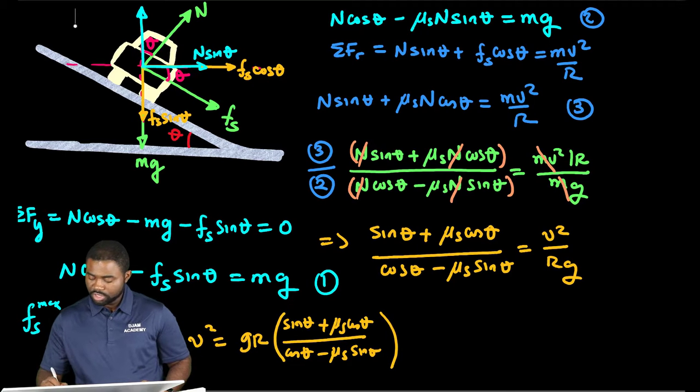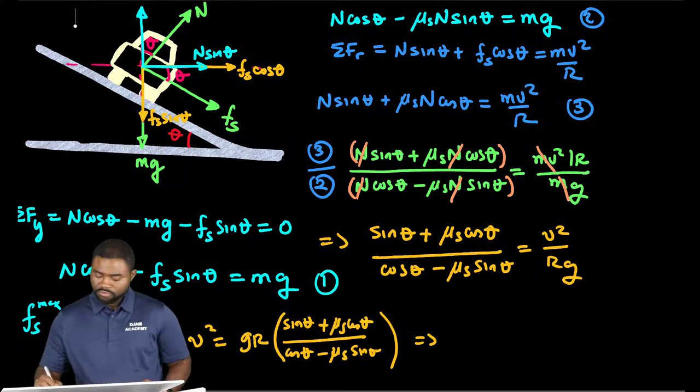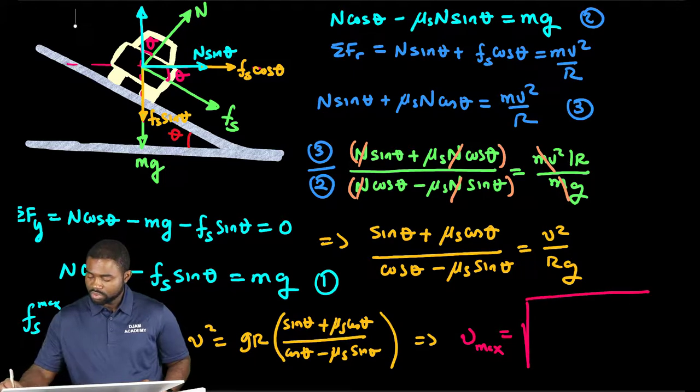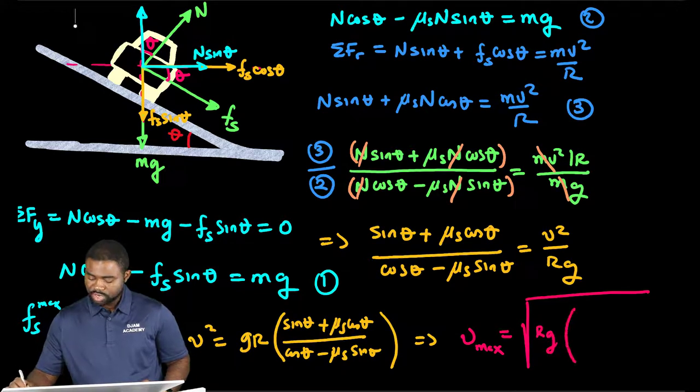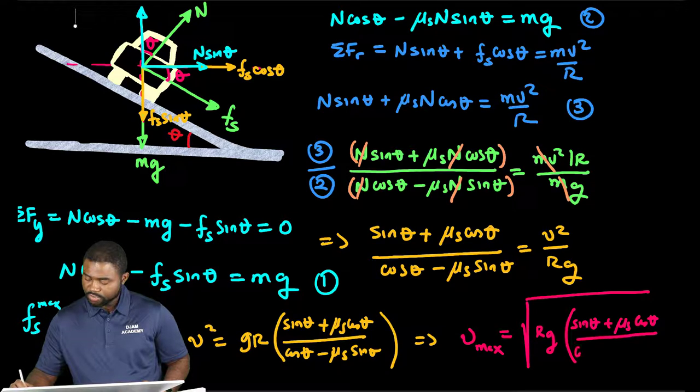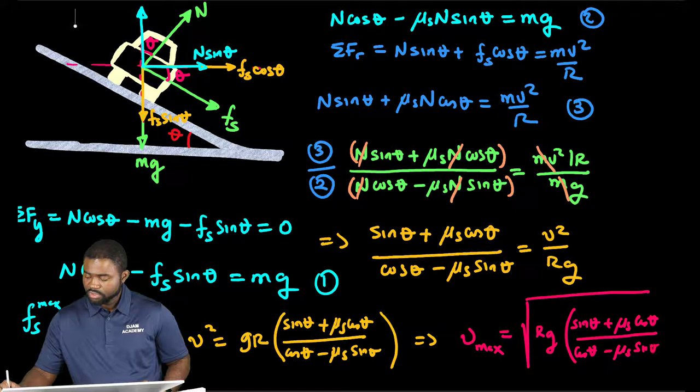So this would mean that v, the maximum speed that you can have, will be equal to the square root of Rg times sine theta plus mu_s cosine theta divided by cosine theta minus mu_s sine theta.